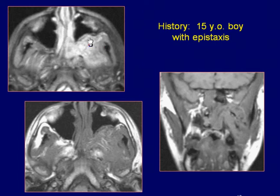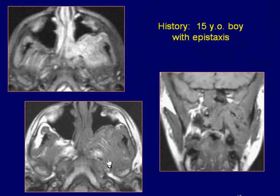the left maxillary antrum. Coronal and axial T1-weighted images demonstrate the lesion as an iso-intense area with obliteration of the left parapharyngeal fat plane. There is iso-intense signal within the right sphenoid sinus.